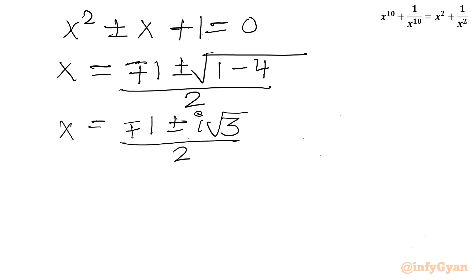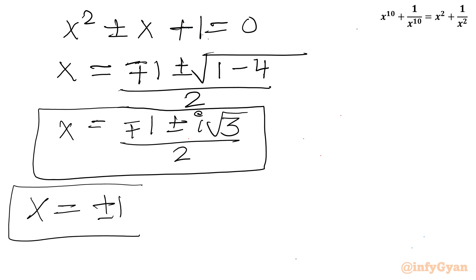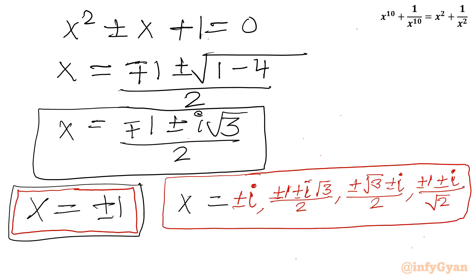So overall we have calculated only two real solutions with multiplicity 2: x = ±1. The remaining 16 are complex valued. This brings the end of the video. Do not forget to like, share, and subscribe. Bye-bye, take care of yourself!